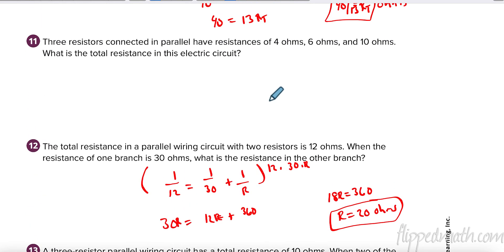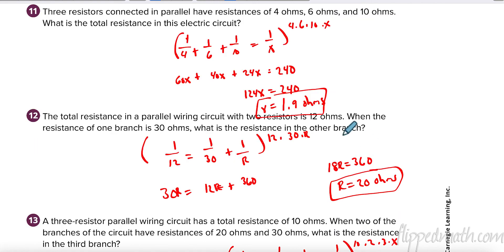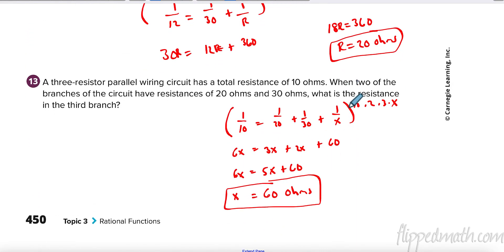For the check: I had 1 over 4 plus 1 over 6 plus 1 over 10 equals 1 over x. I multiplied by the denominators 4, 6, and 10 and got approximately 1.9 ohms. For the other one, instead of multiplying by 10, 20, and 30 — since 20 is 10 times 2 and 30 is 3 times 10 — I get 6x equals 3x plus 2x plus 60, giving x equals 60 ohms. Using the LCD keeps the numbers smaller.